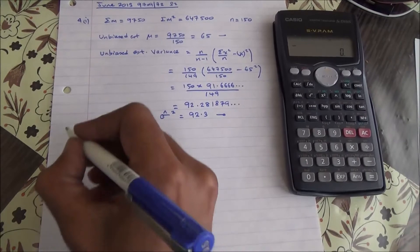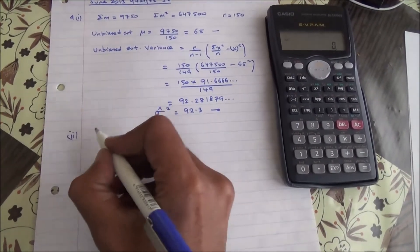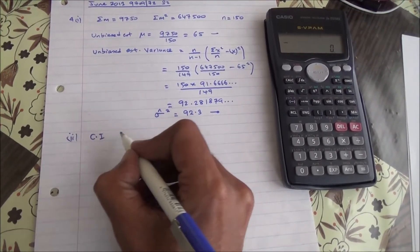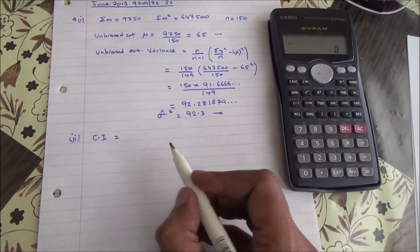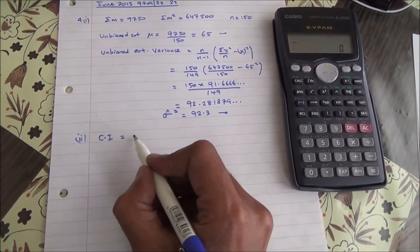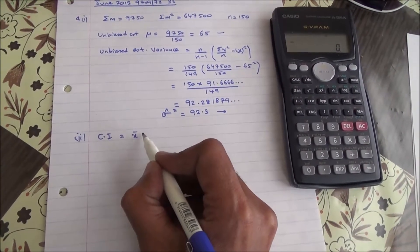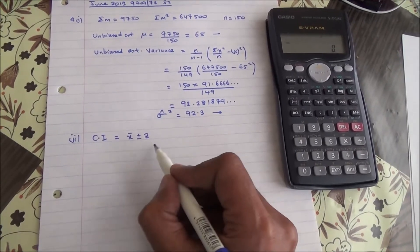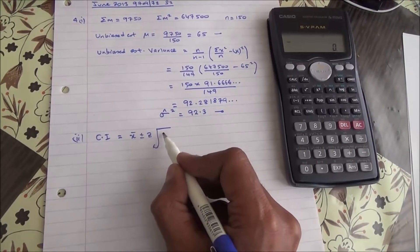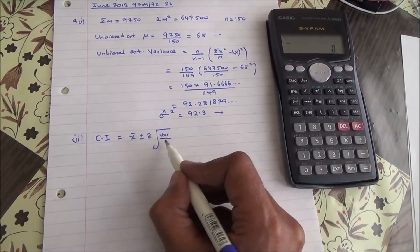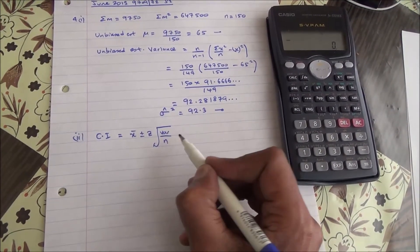Now, for the second part, we need a 98% confidence interval. What is the formula for confidence interval? We're going to take the mean plus or minus the z value times the square root of the variance over n.